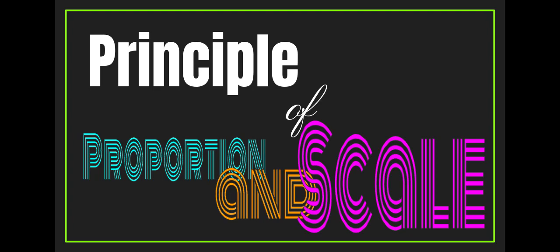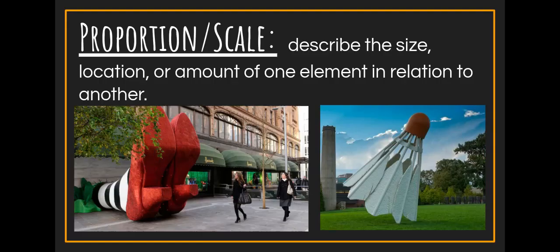Today we're going to be talking about proportion and scale and how that relates to art and how that can manipulate our art to make it more interesting or more dynamic. When we talk about proportion and scale, we are talking about the size, the location, or the amount of one element of art in relationship to another.